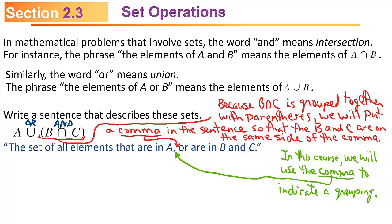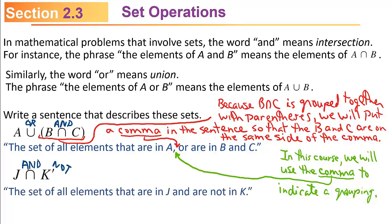When you see a comma in an English sentence, if there's more than one thing on either side of that comma, there are going to be parentheses involved when you write it symbolically. And for J intersect K complement: 'and' is intersection, so you'd read this as 'the set of all elements that are in J and are not in K.' We're simply practicing saying and writing these mathematical statements in common English.